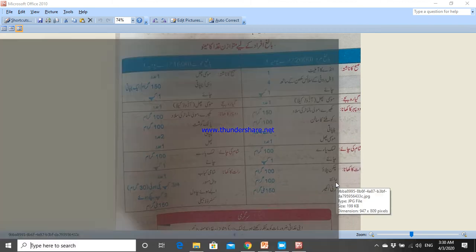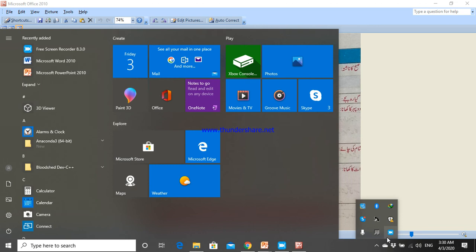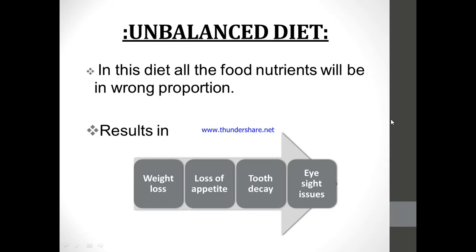Now moving towards the unbalanced diet. An unbalanced diet is a diet that contains nutrients in wrong proportion — where overnutrition or undernutrition is present. If you are taking a nutrient in excess or there is a deficiency of any nutrient in your diet, that diet is unbalanced. This eventually results in weight loss, loss of appetite, tooth decay, or eyesight issues — all body-related problems that occur due to an unbalanced diet.